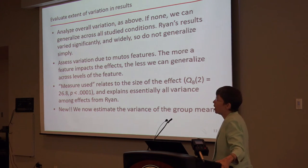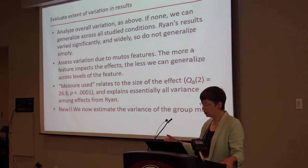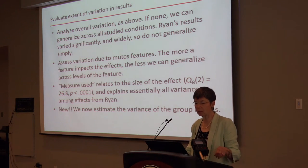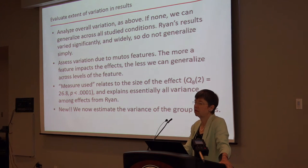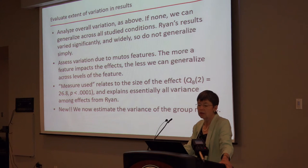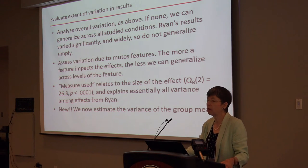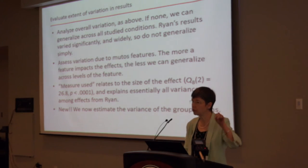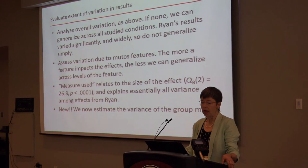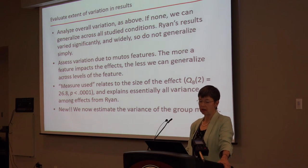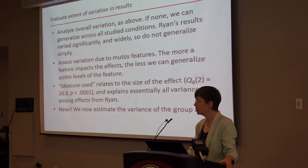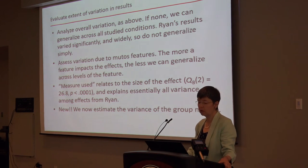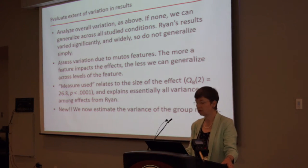Now about the variation. We've already analyzed the overall variation. If you don't find any variation, you could stop there and say everything agrees — although that's a little risky sometimes. Ryan's results for decision-making self-efficacy varied quite a bit, so we can't make a simple statement about whether career interventions work for that outcome. Now I'm going to look at the variation due to one feature I examined: the outcome measure that was used. I found that the measure used relates to the size of the effect.